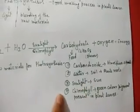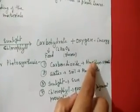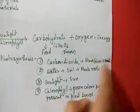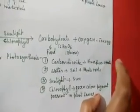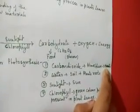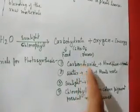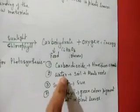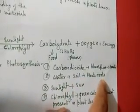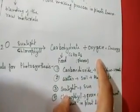The raw materials for photosynthesis are: carbon dioxide, water, sunlight, and chlorophyll. Carbon dioxide comes from the atmosphere and enters the plant through stomata — small pores present in the leaf surface. Water is present in the soil; the plant's roots absorb it and send it to the leaves.